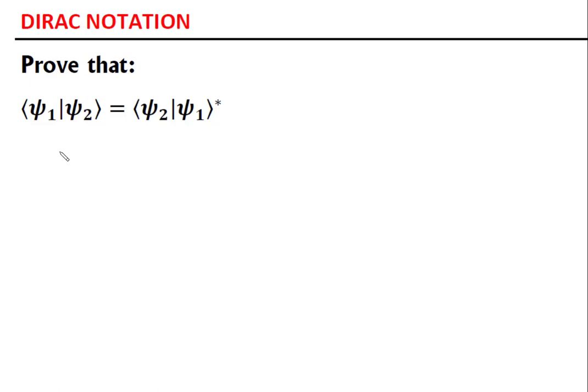So let's start with the left hand side. We have psi 1 psi 2 ket in the Dirac notation is the same thing as psi 1 which will carry the conjugate and psi 2 without the conjugate d tau.